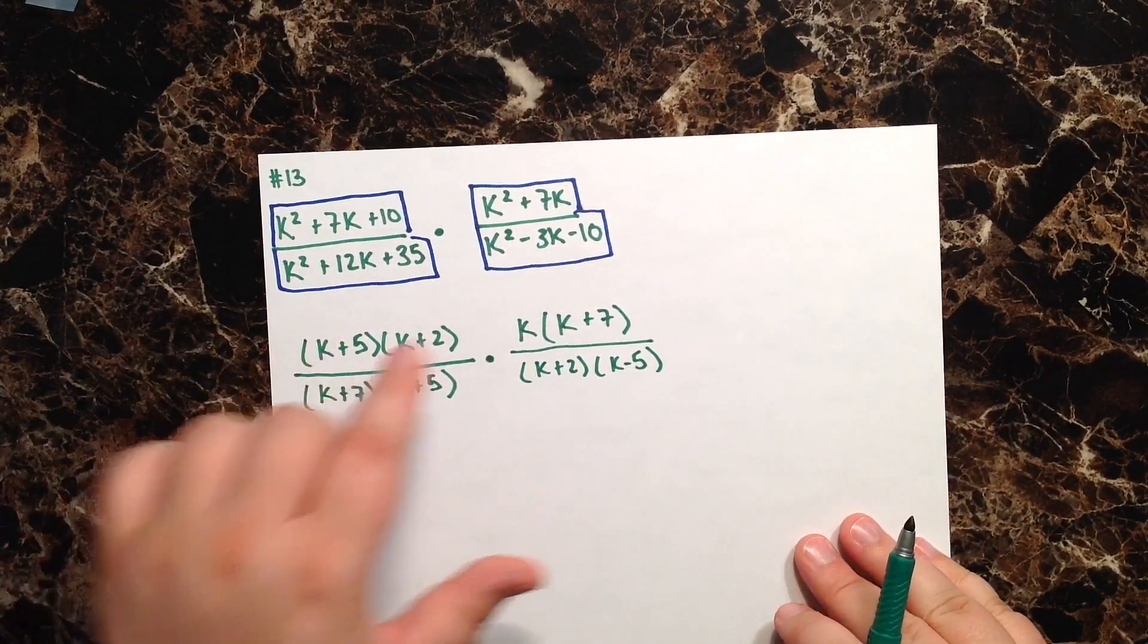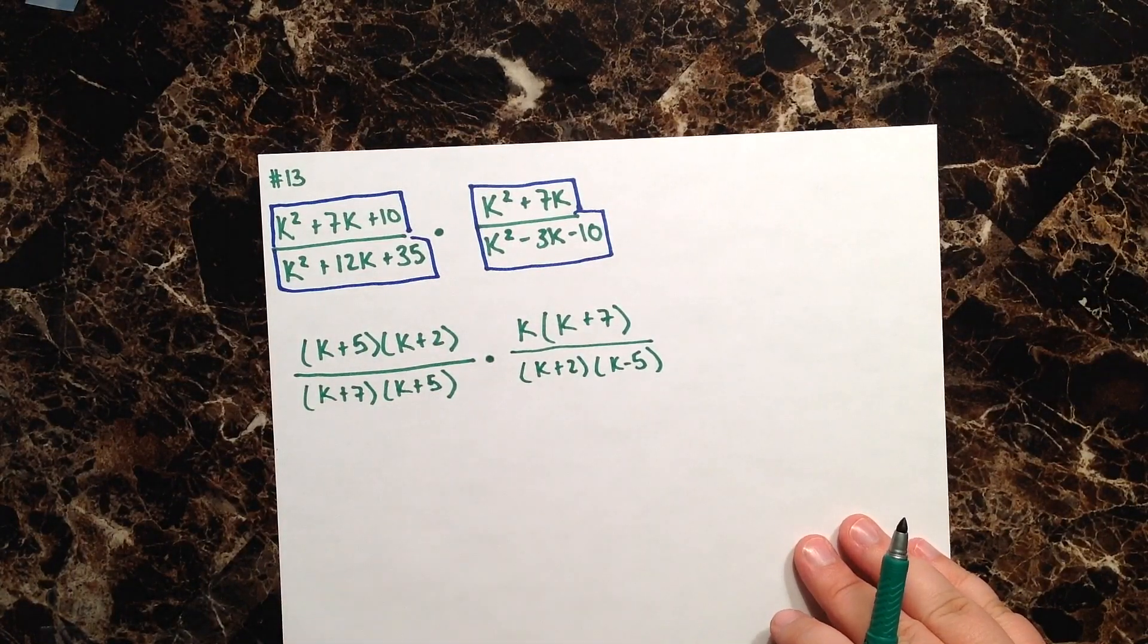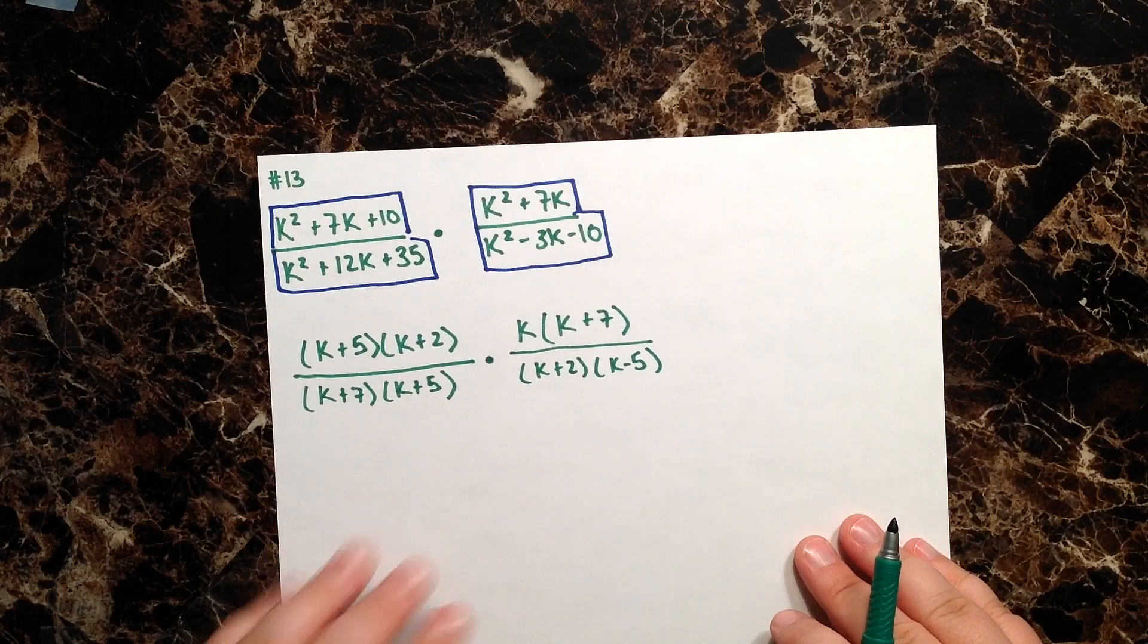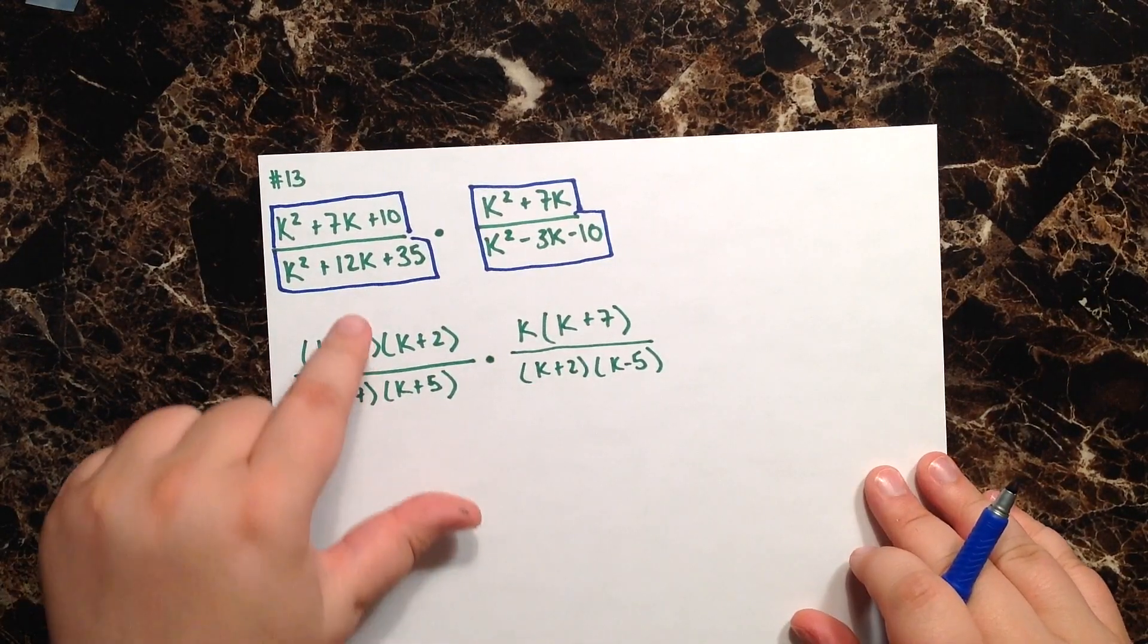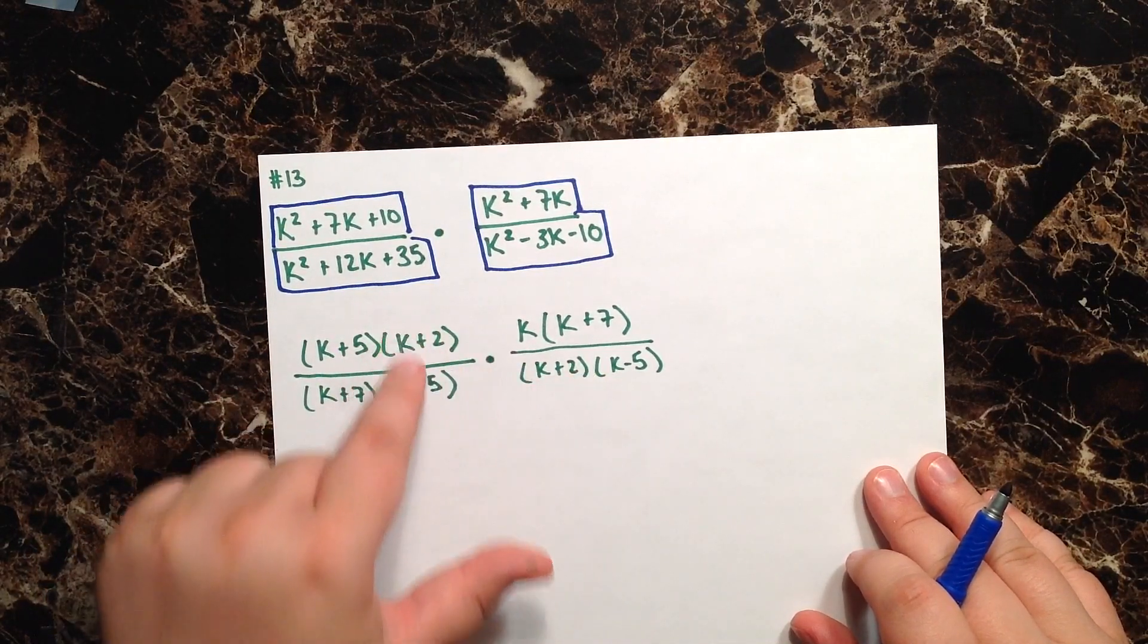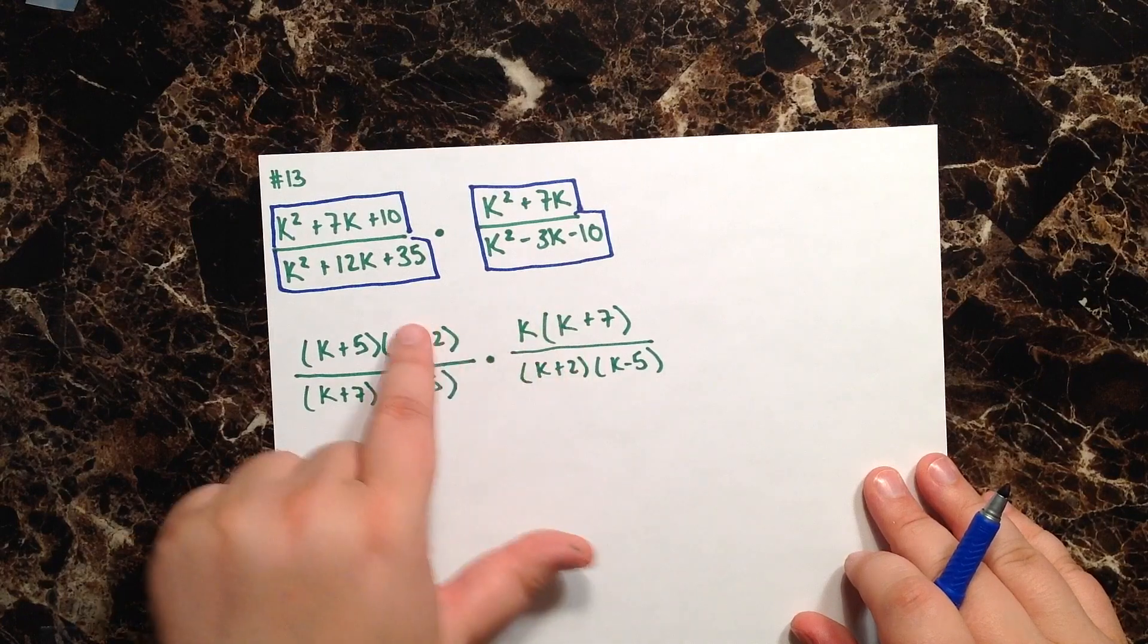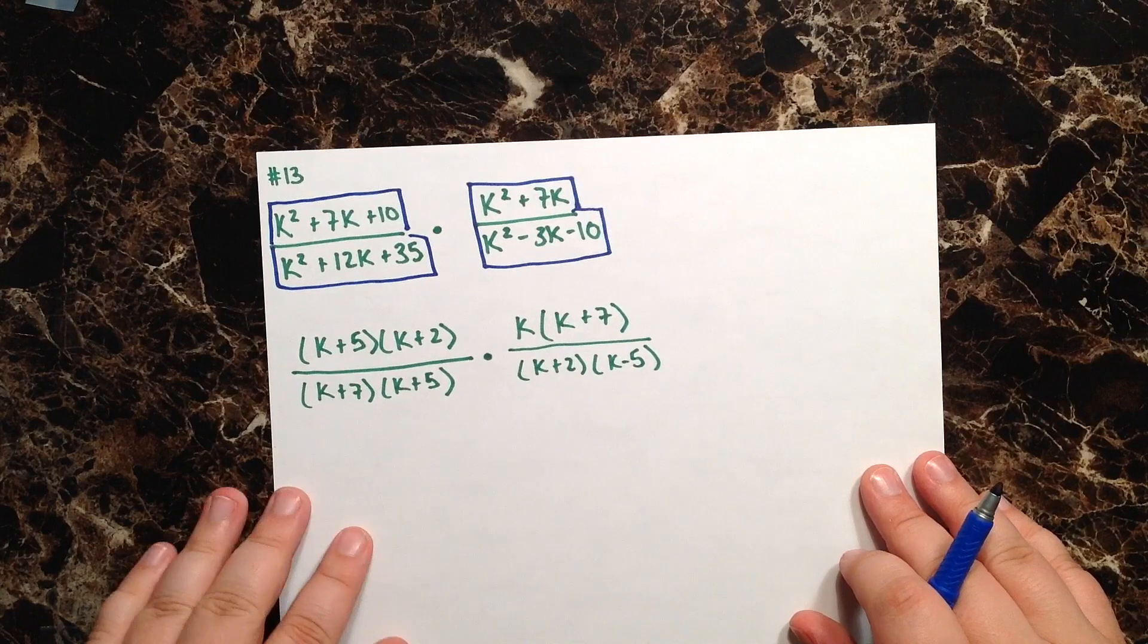Now that each of my numerators and each of my denominators have been factored, now comes the fun part and I can start canceling things out. Remember, I can cancel up and down or diagonally, but I cannot cancel from left to right or right to left.